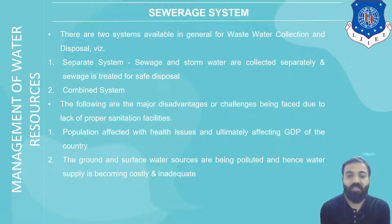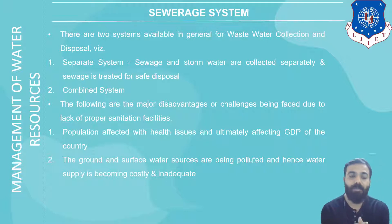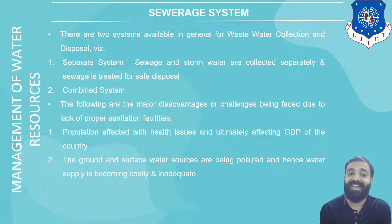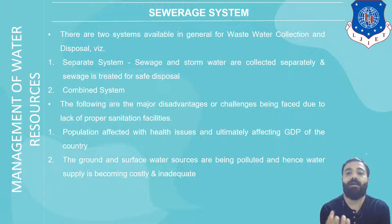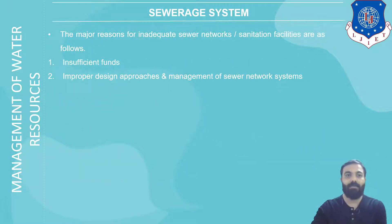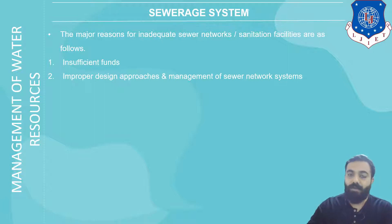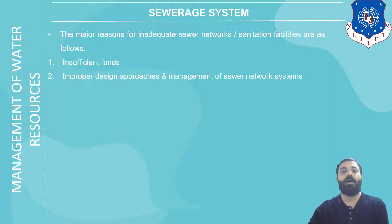There are some drawbacks or challenges faced due to lack of proper sanitation facilities. First, the population is affected, ultimately impacting the GDP of the country. Second, ground and surface water sources are being polluted, hence water supplies become costly and inadequate. Due to inadequate sewerage systems, ground water and surface water are polluted and the GDP of the country also deteriorates. The two major reasons for inadequate sewer networks are: insufficient funds, and improper design approach and management of sewer network systems.